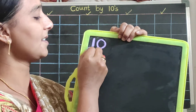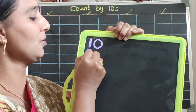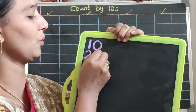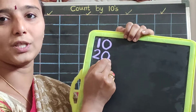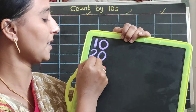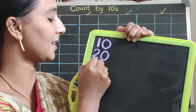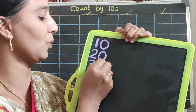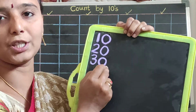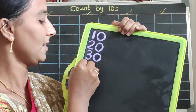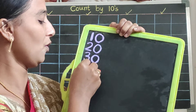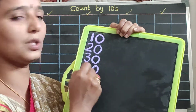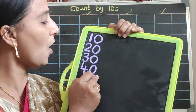One after, write the two, then beside you should write the zero — two, zero, twenty. Then write the three, then again you should write the zero — three, zero, thirty. Write the number four, then zero — four, zero, forty.